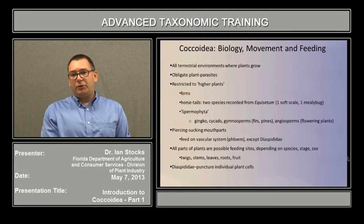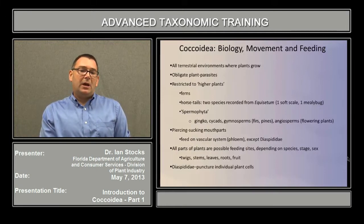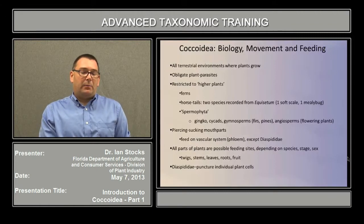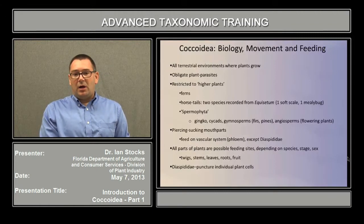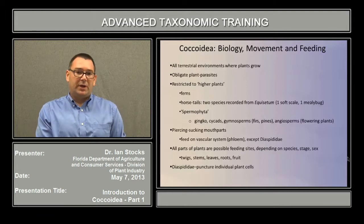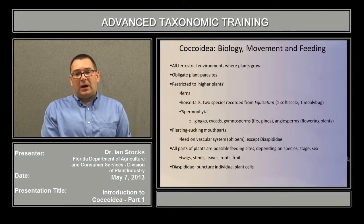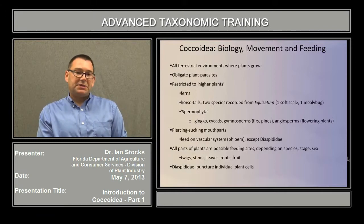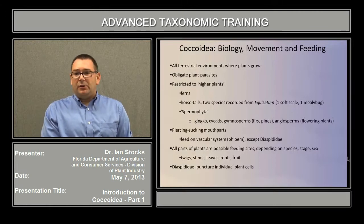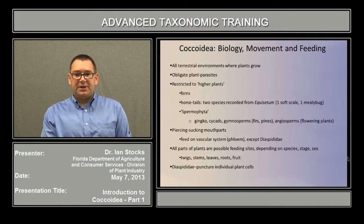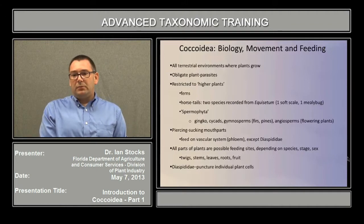Coccoidea can be found in basically all terrestrial environments where plants grow. We can characterize them as obligate plant parasites, essentially the plant analog of things like ticks, where their biology is essentially contained in association with their host. By and large, they're restricted to higher plants. There are certain species of mealybugs which can be quite common on ferns. There are only two species recorded from horsetails, so the horsetails, such as Equisetum, are not known to be a very good host for scales or mealybugs.